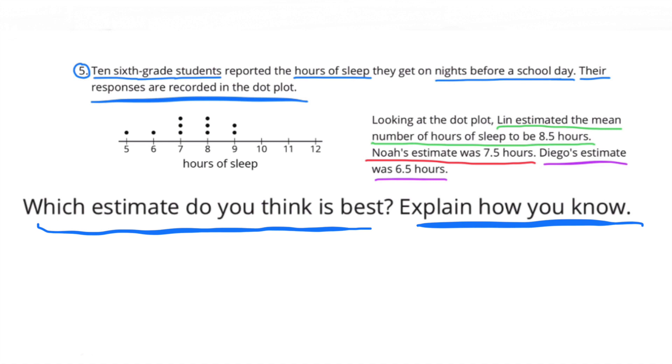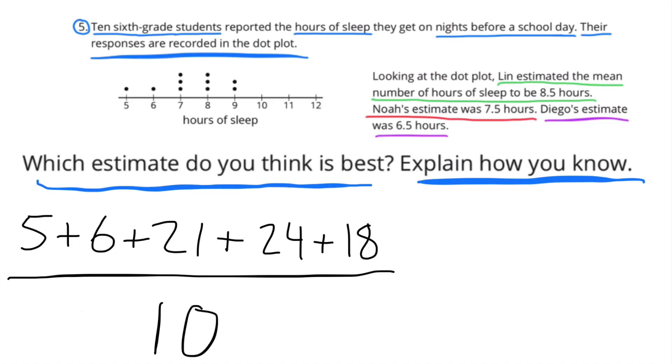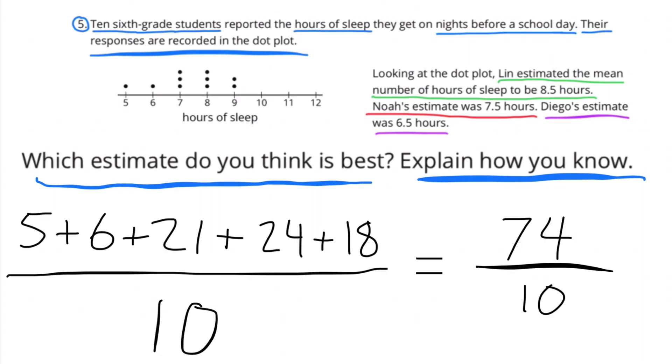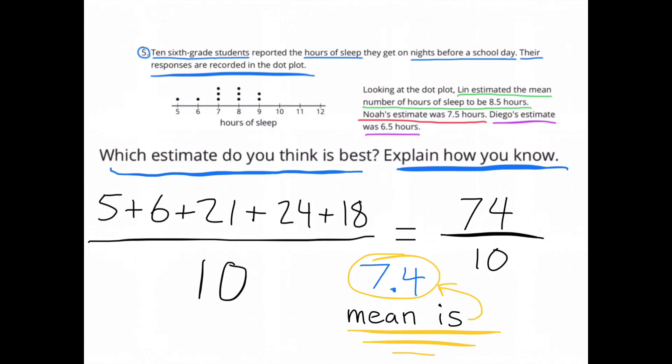Well, I'm going to go ahead and add up all the data: 5 plus 6 plus 21 plus 24 plus 18, and divide that by 10, since there were 10 sixth grade students that were reporting their hours of sleep. So that total 74, and 74 divided by 10 is 7.4. So the mean is actually 7.4. Noah's estimate is closest.